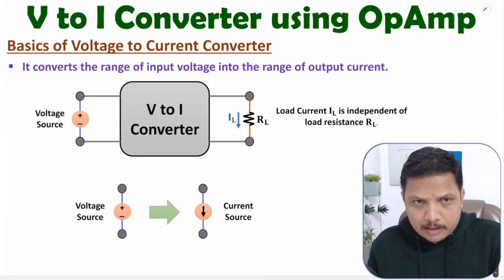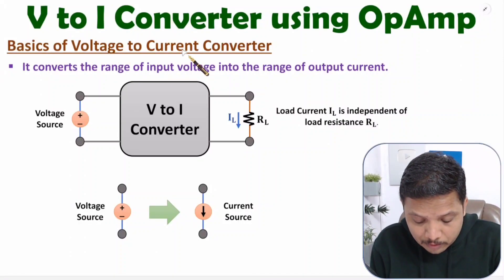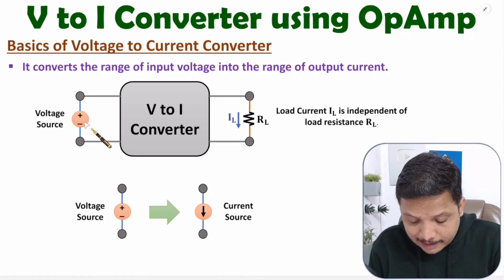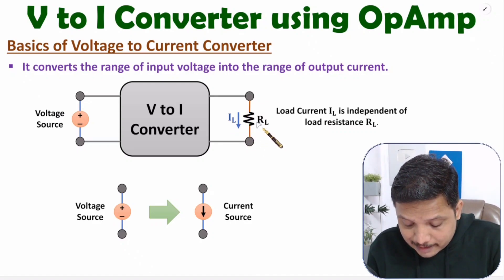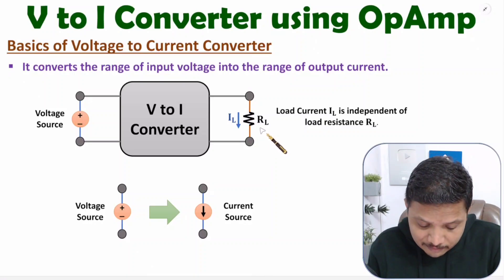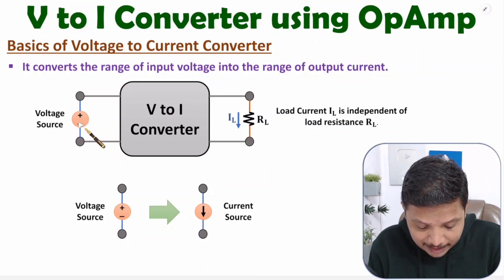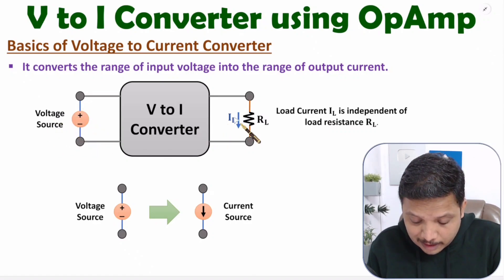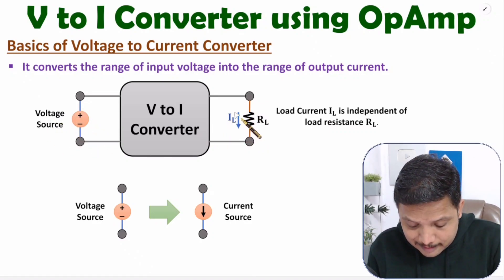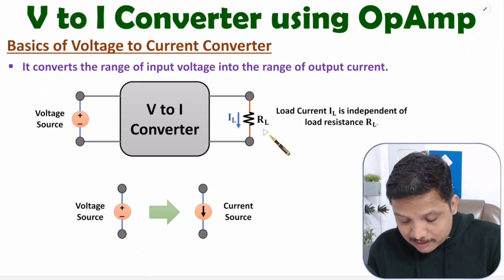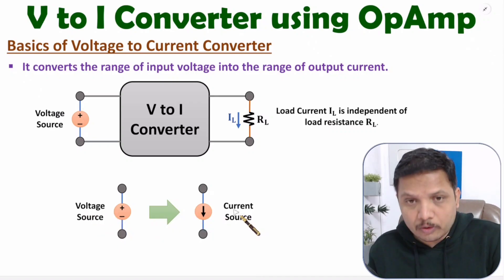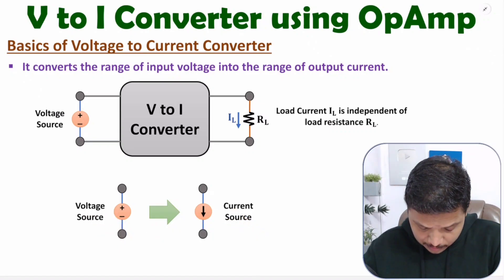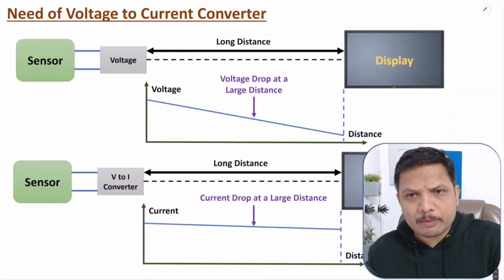V2I converter means we need to convert voltage into current. We have a voltage source at the input side and we translate that into current at the output. The key point is that this load current is independent of load resistance RL. So in short, here we are converting a voltage source into a current source.